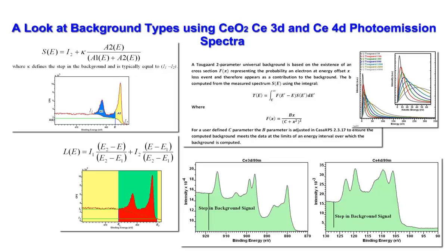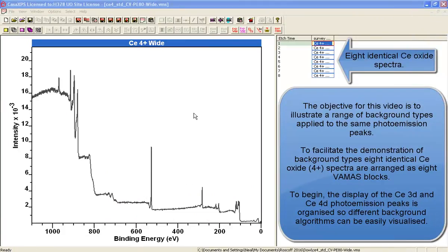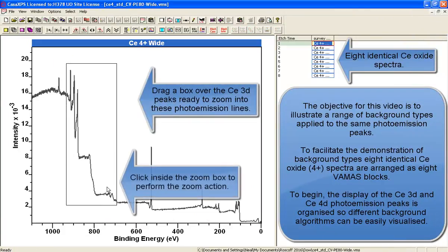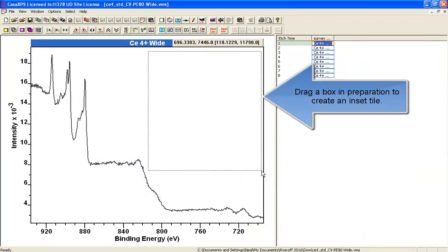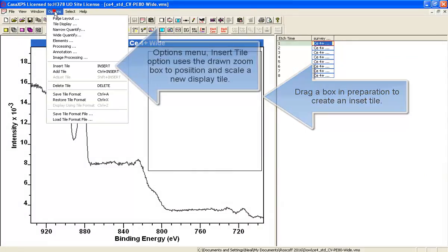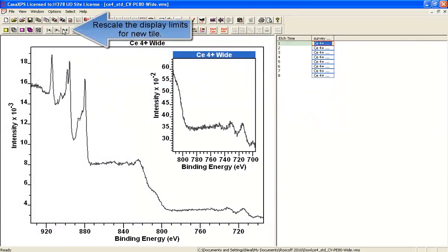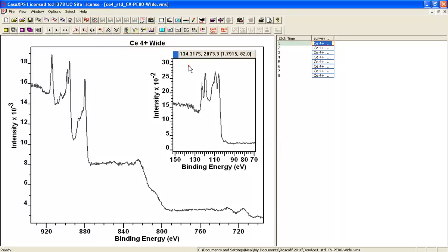There are many different background types in CASXPS, and we'll look at a few of them here using spectra from cerium oxide in a 4+ state. We've created a dataset that contains eight equivalent spectra, all the same data, and what we'll do is apply different background algorithms to the cerium 3D and the cerium 4D peaks.